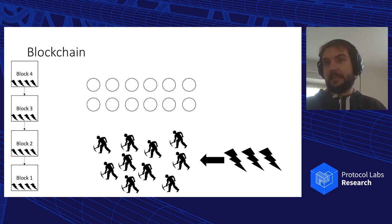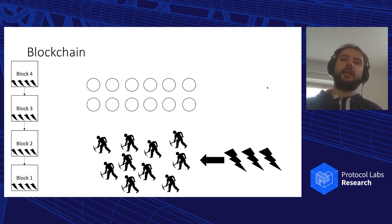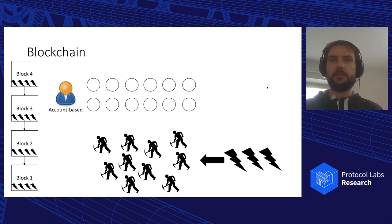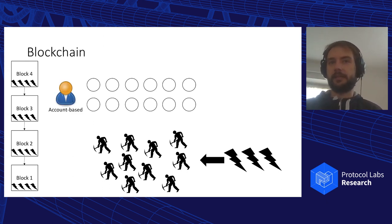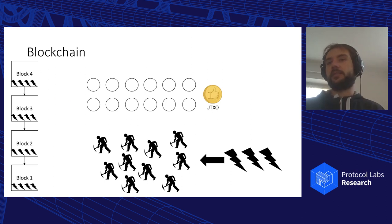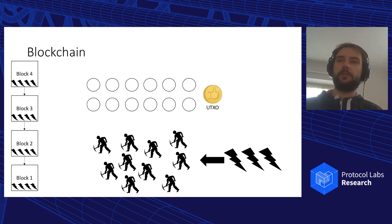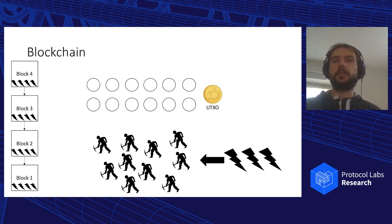State is a state of a set of objects. We have two main data models for blockchains: either account-based, where we keep track of balances of users, or a UTXO model, where we keep track of coins, who owns them and whether they were spent or not. In this talk, I'll focus on the account-based model.